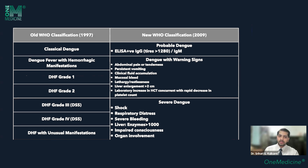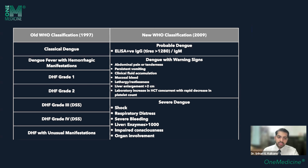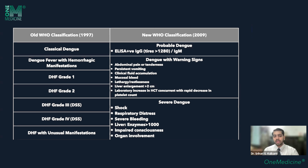Let's look at the classification of dengue. The old 1997 classification included classical dengue, dengue hemorrhagic fever grades 1 to 4, with grades 3 and 4 being dengue shock syndrome, and dengue with unusual manifestations. The problem with this classification was that it was vague and did not help in treating patients — there was no guidance on who should be admitted, treated on an outpatient basis, or shifted to ICU. The newer 2009 classification is streamlined and makes it easier to determine the appropriate care level.